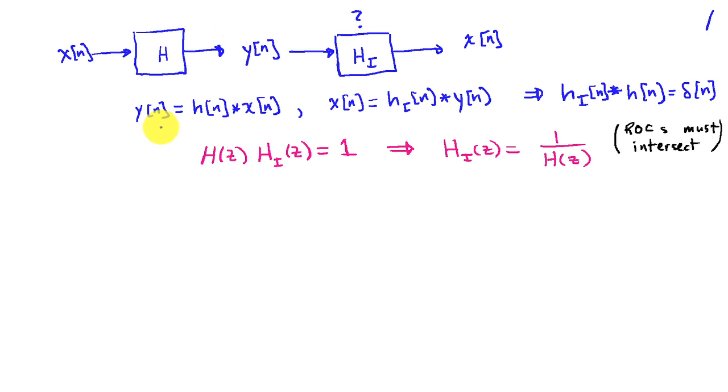In the time domain we have that Y of n is H of n convolved with X of n, and therefore we're looking for an inverse system, HI of n, for which HI of n convolved with Y of n will give me back X of n. You can do the algebra here and find that this implies that HI of n convolved with H of n must be equal to delta of n.